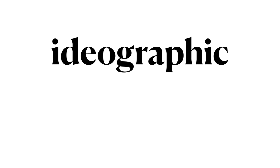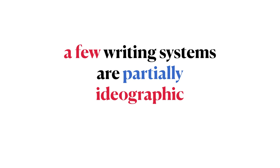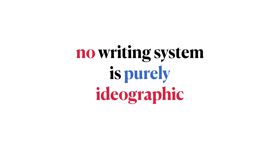The third possible principle is ideographic. In an ideographic writing system, the symbols represent ideas. In the 17th century, Leibniz and other scientists were trying to come up with an ideographic writing system where each symbol represents an abstract idea. A few writing systems are partially ideographic — there is a small subset of Japanese symbols that are ideographic. However, no writing system is purely ideographic. There was a long-held fallacy that the Chinese writing system is purely ideographic, but that is false; the Chinese writing system includes lots of information about sounds.